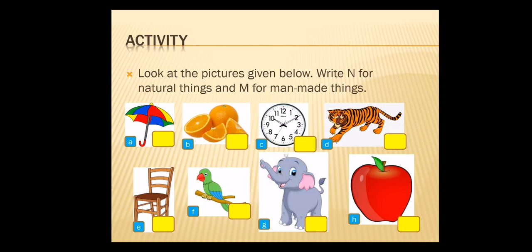Then E — what is the E picture? Chair. Chair is made by human, so it is a man made thing. You can write the letter M. Then parrot — parrot is a natural thing, so you can write the letter N. You can see the elephant — it is natural, so you can write the letter N.